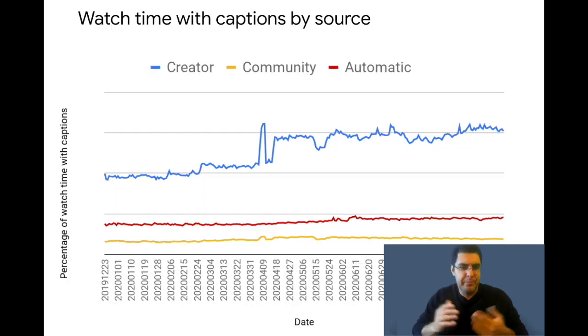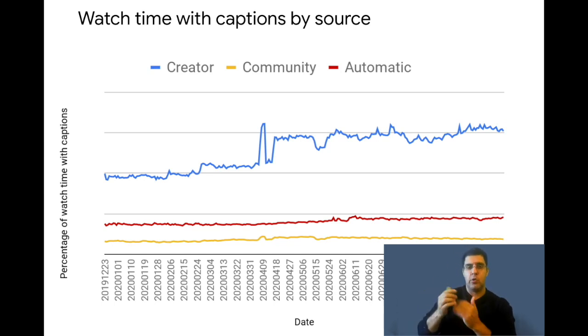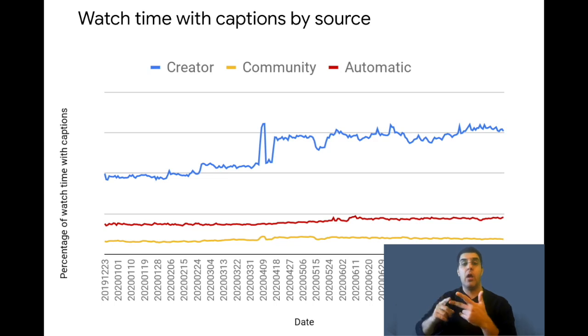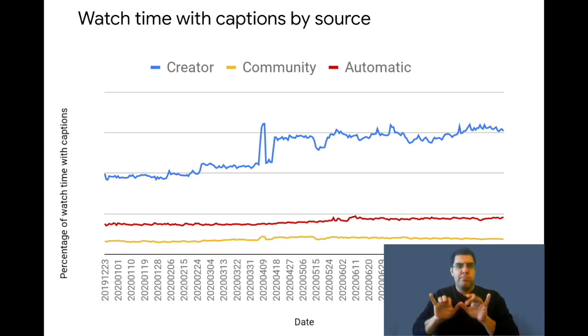The next graph shows how consumption or watch time differs by the source of captions. This one does include automated, but we made our decision based on the two types of human captions. You can see that automated is pretty small relative to creator. But again, the important thing is the crowd in yellow is very, very small relative to creator on a percentage of watch time as well. Those two data points really led us to the conclusion that we should be doubling down on creator captions, because that's where the captions are being created and consumed. Hopefully that explains why people wanted to keep community captions — but we are only retiring community captions because they simply did not generate a lot of captions for our system.